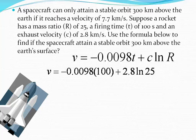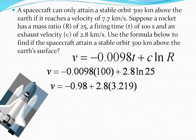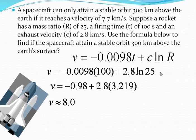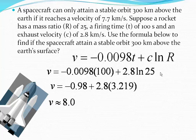Now this just basically becomes a calculator problem. As soon as you find the formula, plug in what you've got. So you do 100 times negative 0.0098, which will give you negative 0.98. You take the ln of 25 over on the right-hand side. Get 3.219. And you'll take and multiply that by 2.8. And then add your negative 0.98. And it gives you about 8.